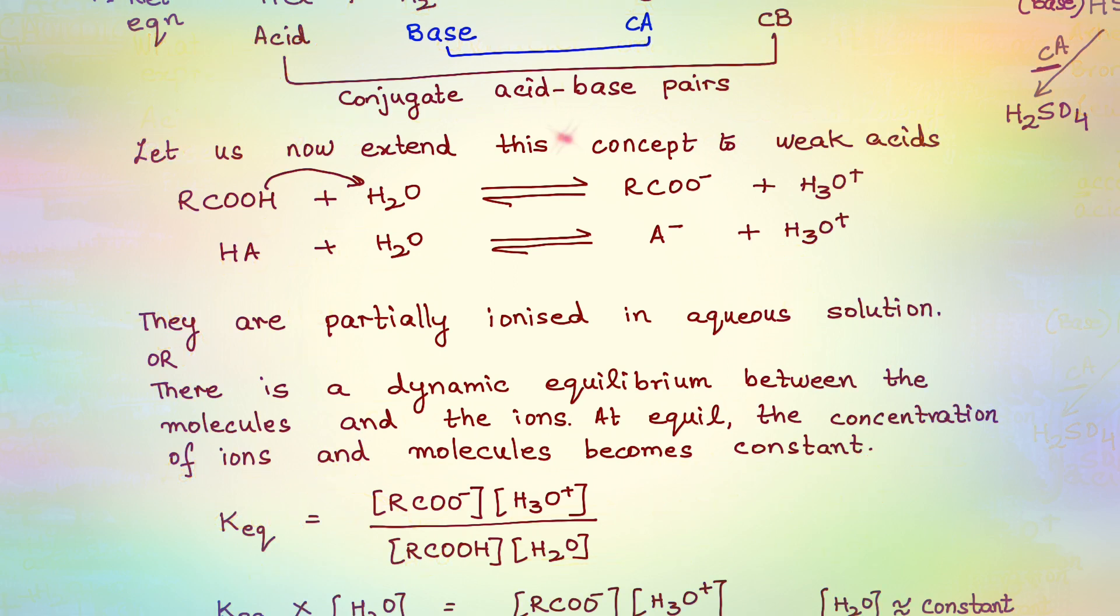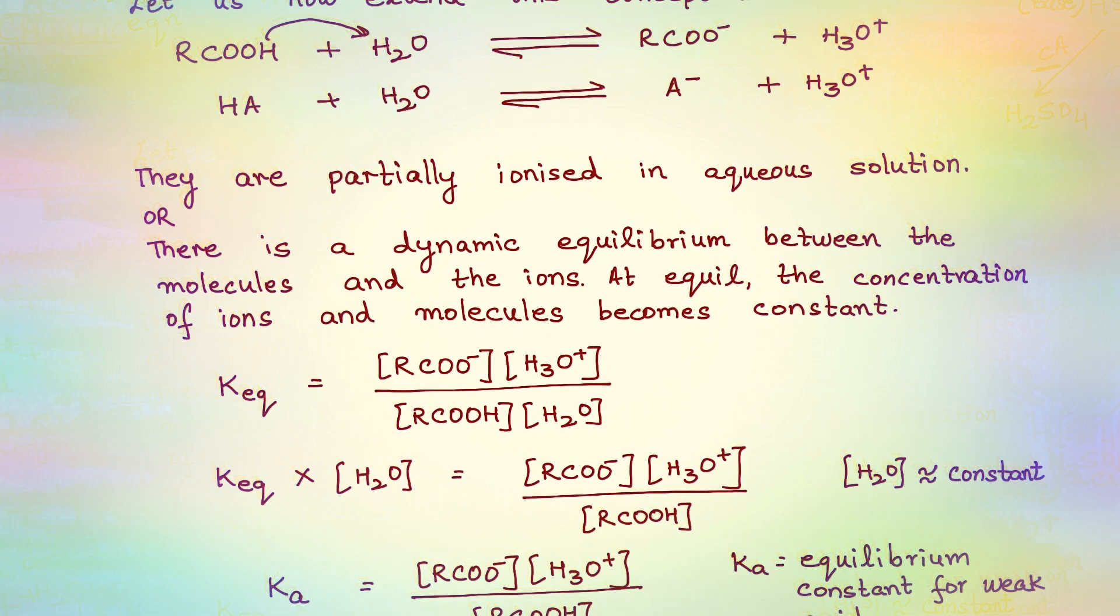We are going to extend our concept to weak acids. Again what we have here: RCOOH, acid losing a proton forming carboxylate ion, water gaining a proton forming H3O+. To make things more generic, I am now going to write the acid as HA plus H2O in equilibrium with the anion and H3O+, so that we can connect our Bronsted and Lowry concept to any acid rather than limiting ourselves only to RCOOH.